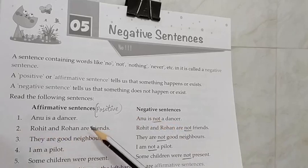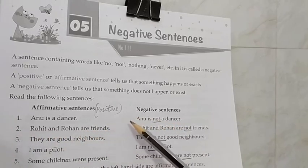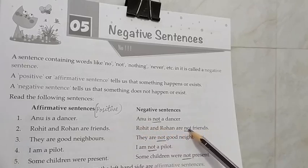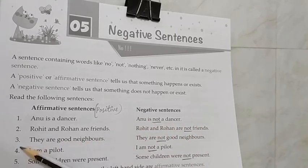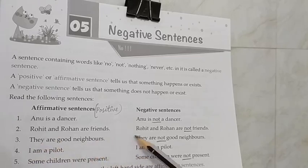Second: Rohit and Rohan are friends. Positively saying, both are friends. When you change into negative: Rohit and Rohan are not friends. When you add 'not' here, that means they are not friends. Third: They are good neighbours. They are not good neighbours.